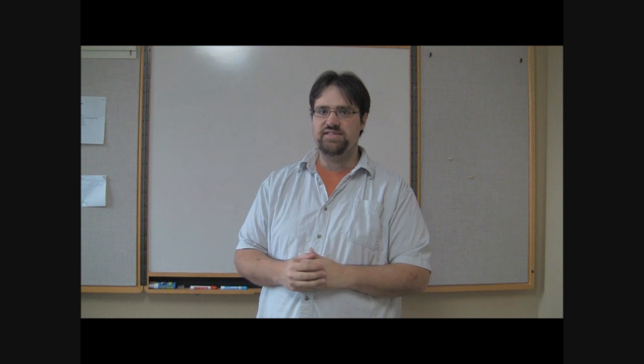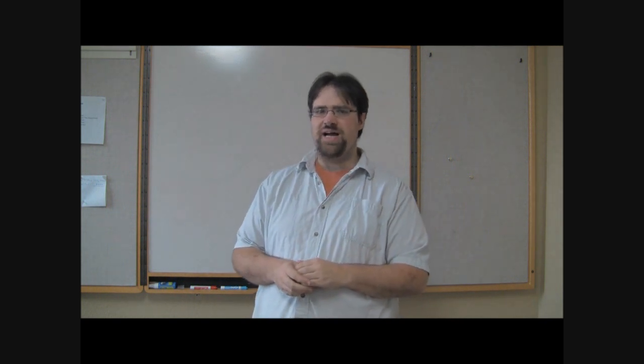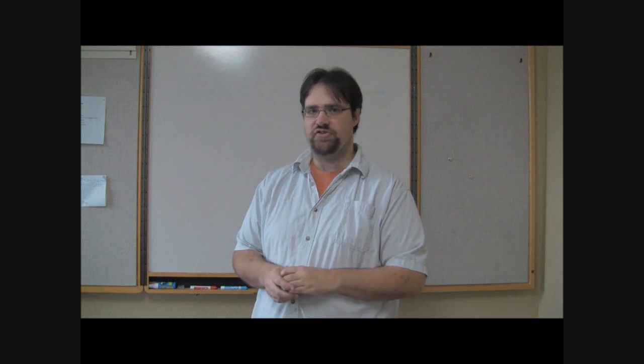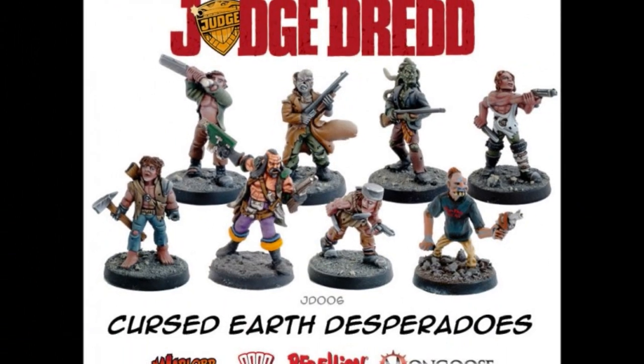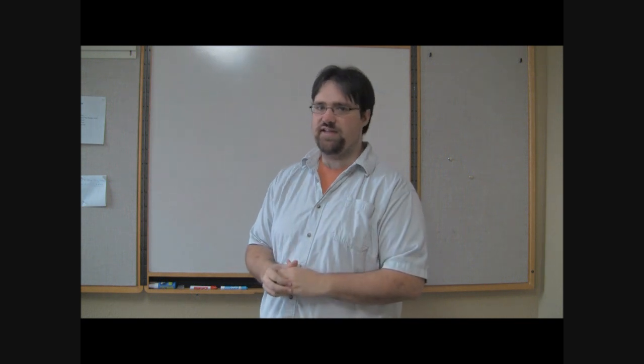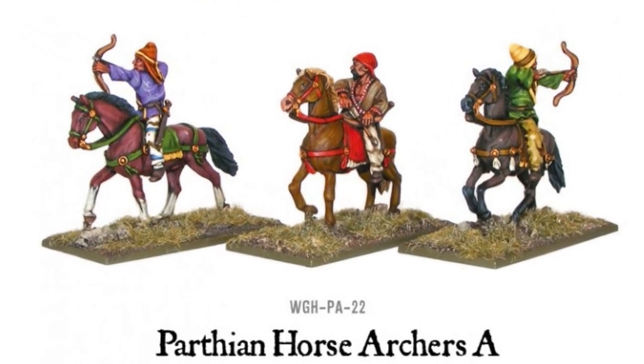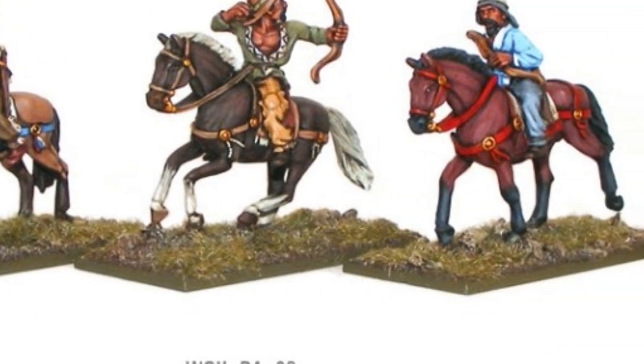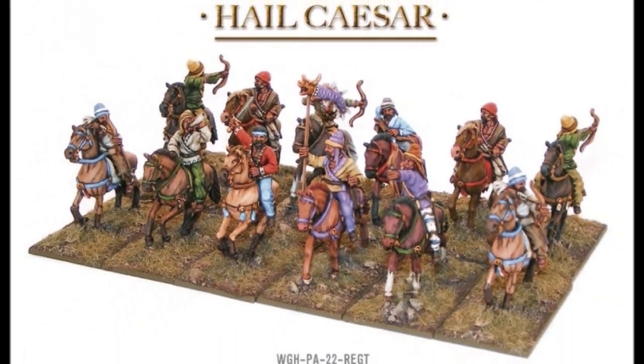The folks over at Warlord Games have also been releasing some new stuff, starting with the Cursed Earth Desperados box set for Judge Dredd miniatures game. The box set contains eight metal miniatures and gives players who don't want to play on the side of the law a chance to play the most dangerous outlaws and freakish mutants in Mega City 1. Warlord's also released the Parthian Horse Archers for their Hail Caesar line, allowing players to bring these famous riders to their new games to conquer their foes with speed and deadly precision. Warlord is selling these famous archers either in packs of three or as a single group of 12 miniatures as a regiment.